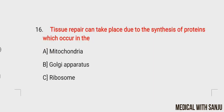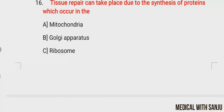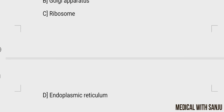Question number sixteen: tissue repair can take place due to the synthesis of proteins which occur in the — option A: mitochondria, option B: Golgi apparatus, option C: ribosome, option D: endoplasmic reticulum. The right answer is option C, ribosome.